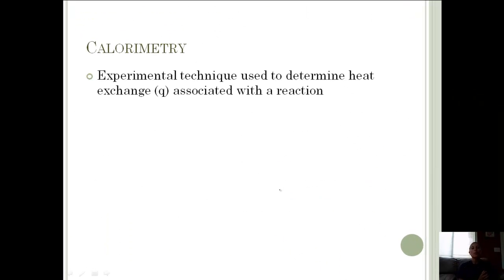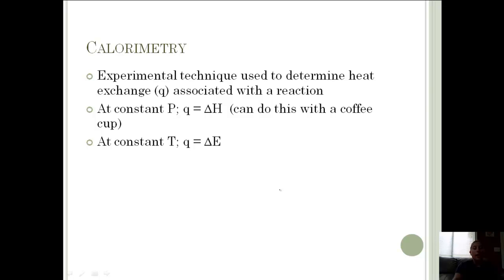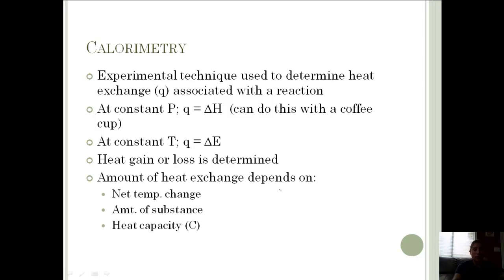Let's look at the second part, which is calorimetry. Calorimetry is an experimental technique used to determine the heat exchange, or Q, associated with a reaction. Sometimes we have to do this experimentally. At constant pressure, Q equals delta H. We can do this lab with a styrofoam coffee cup because it retains the heat of the reaction inside, then you can measure the change in temperature. At constant temperature, Q would equal delta E. From this, we can determine heat gain or loss.